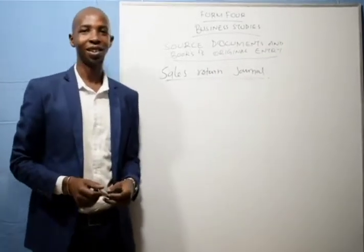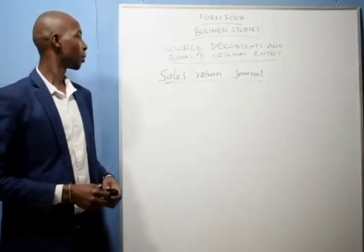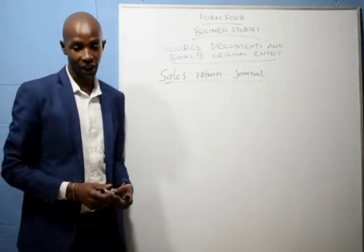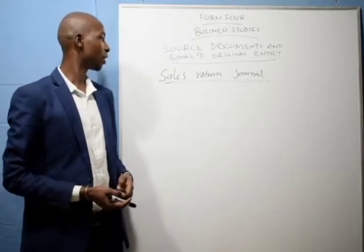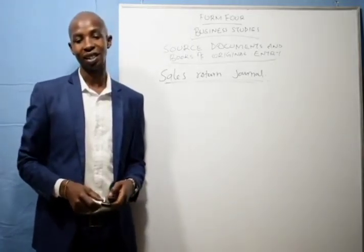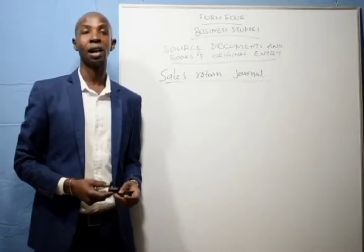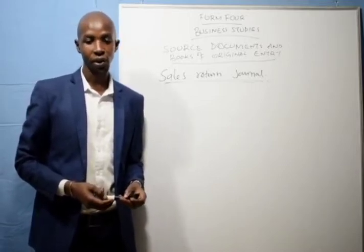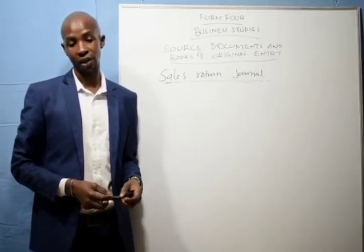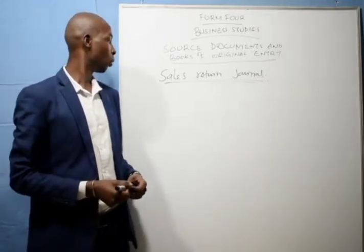Hello students. In our previous class we studied about books of original source documents and books of original entry. We looked at one of the books of original entry — that was the sales journal. We have several books of original entry that include: sales journal, sales return journal, purchases journal, purchases return journal, cash receipts journal, cash payment journal, petty cash book, analysis of cash book, and lastly the general journal, which is called the journal proper.